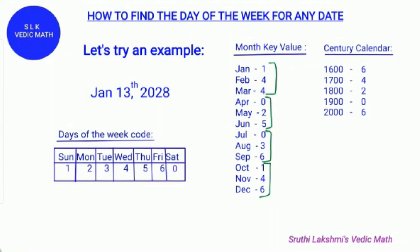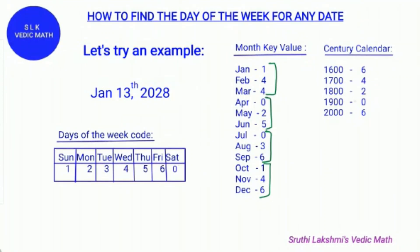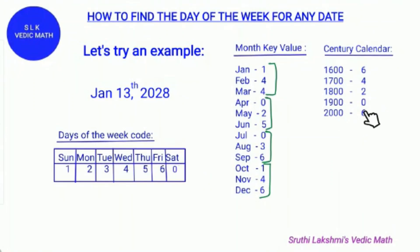For the century calendar: the 1600s is 6, the 1700s is 4, the 1800s is 2, the 1900s is 0, and the 2000s is 6.